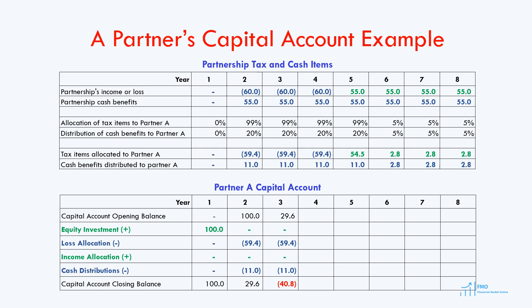In year 4, we begin with a deficit of 40.8. There is no equity investment, and we again have a loss of 59.4 allocated to partner A, no income, and cash distributions of 11. So the capital account deficit will increase further by the amount of the loss and cash distributions.